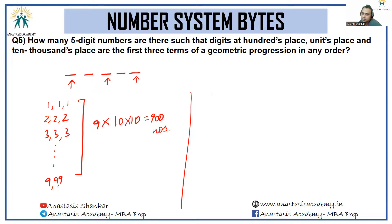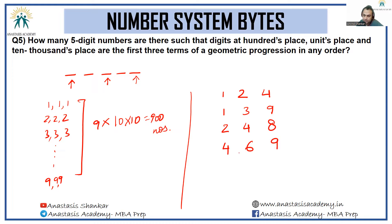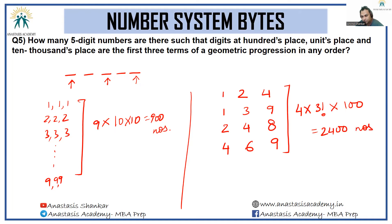For non-constant GPs with single digits: (1,2,4), (1,3,9), (2,4,8), (3,6,9... wait, 4,6,9 also works as a GP with ratio 3/2). There are 4 such distinct GPs. Each has 3 distinct digits arrangeable in 3! = 6 ways, and the remaining 2 blank spots can be filled in 100 ways: 4 × 6 × 100 = 2400 numbers.